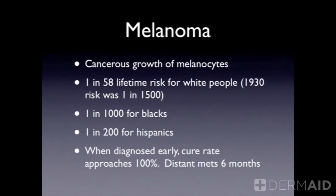The worry is that melanoma can sometimes develop within a mole. It can also develop de novo — just on normal skin, you may get a brand-new spot that's melanoma from the very beginning. But about 50% to 70% of the time, depending on what study you read, melanoma cancer can develop from a preexisting mole. About 1 in 58 Caucasians in the United States will now get melanoma in their lifetime — that risk was about 1 in 1,500 back in 1930.